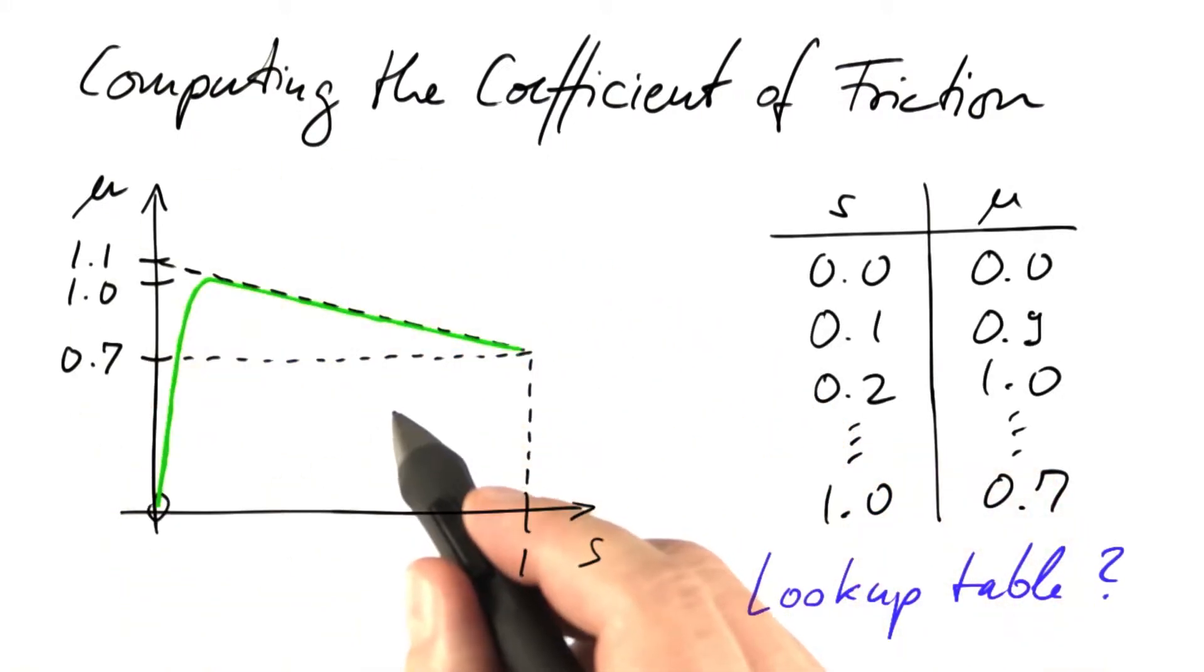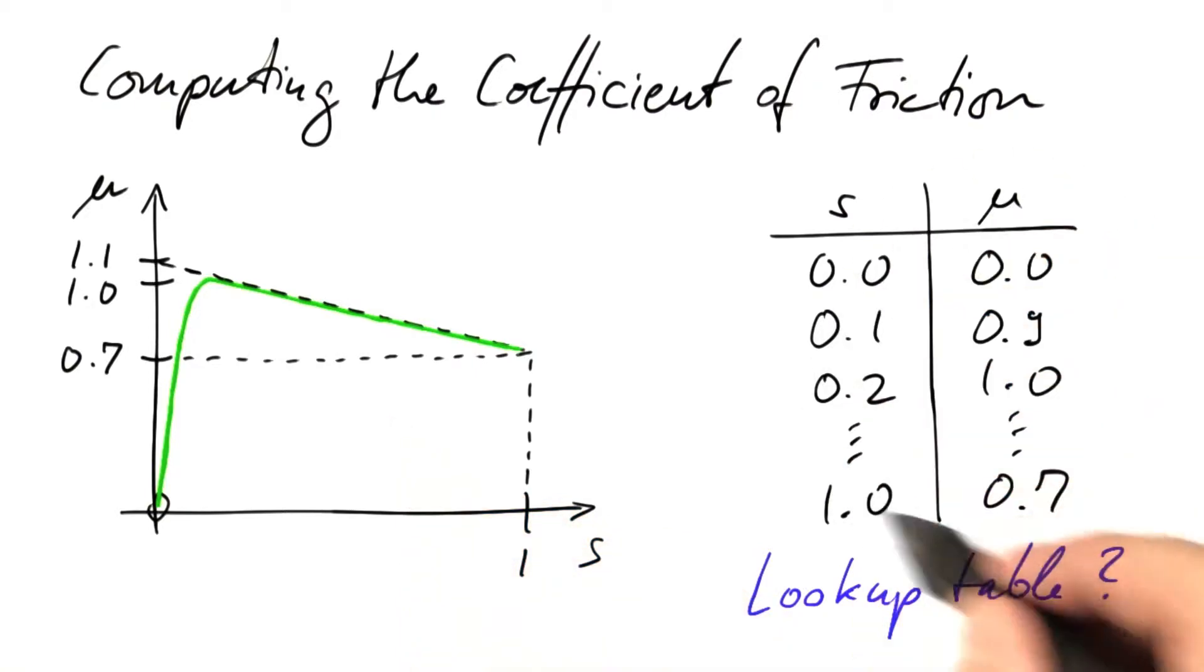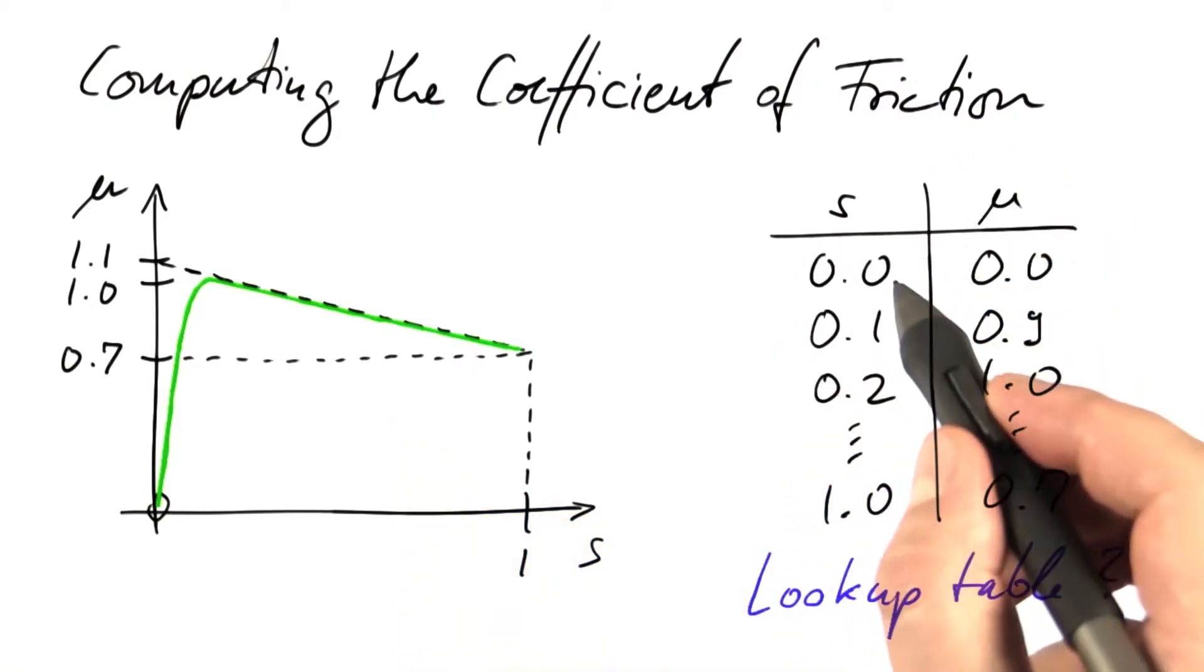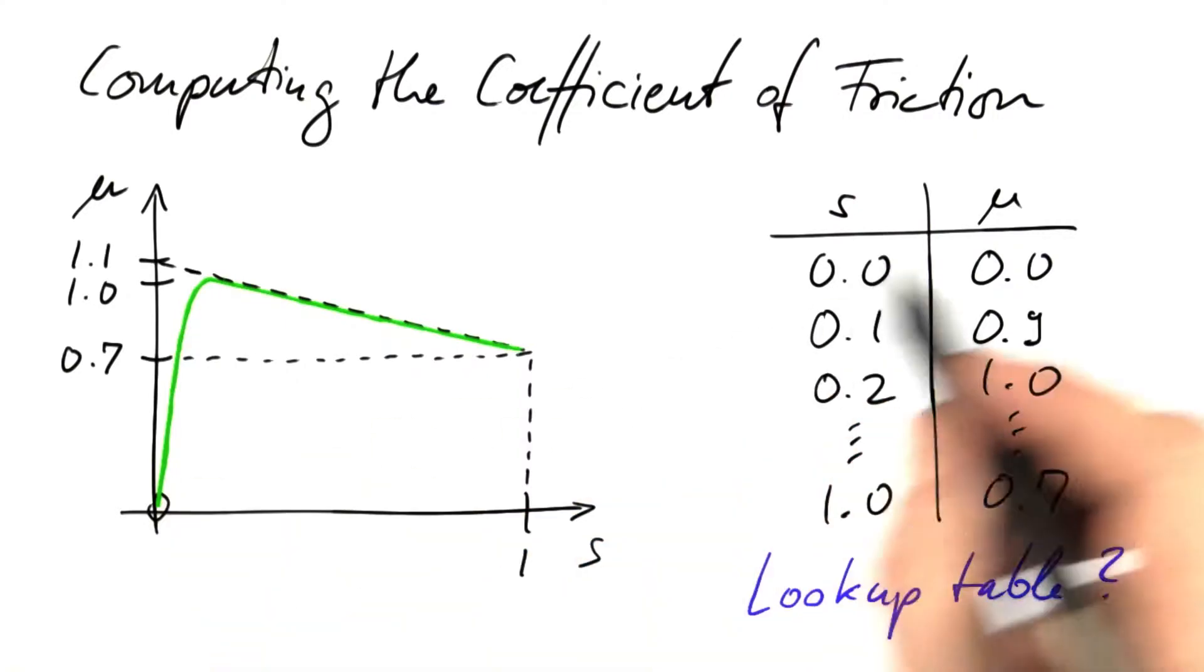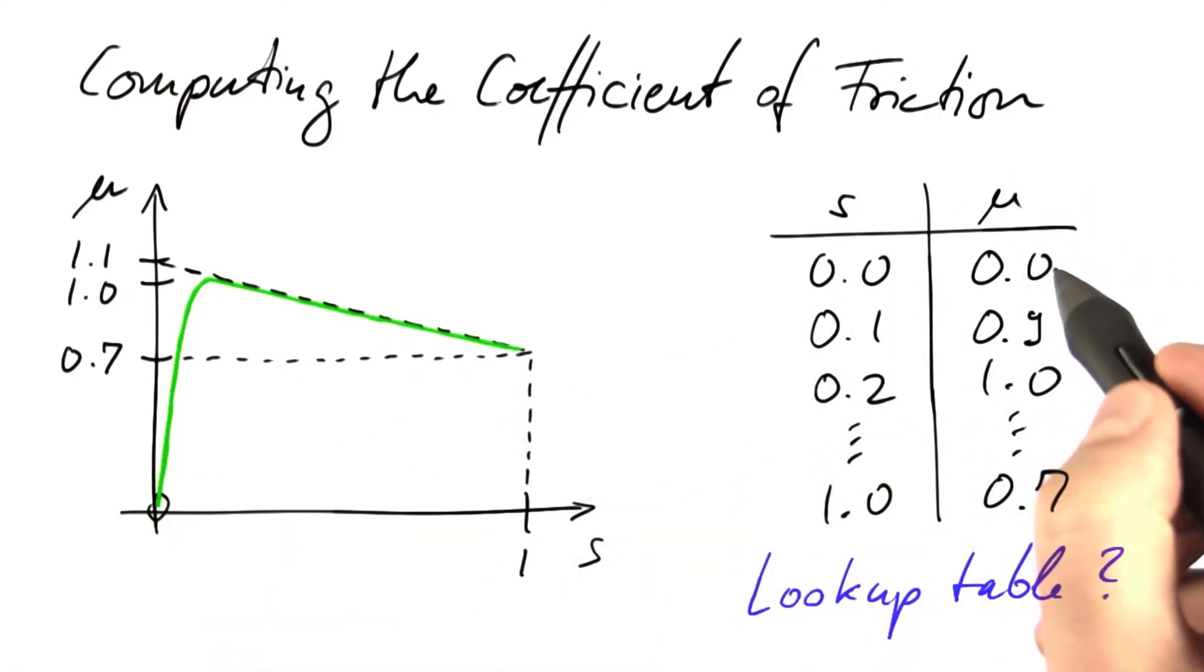One way to deal with such empirical data in the simulation would be to use a lookup table, such as this one. If we input a wheel slip of zero, we output a coefficient of friction that's zero as well.